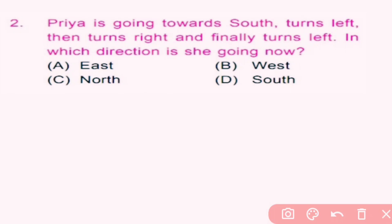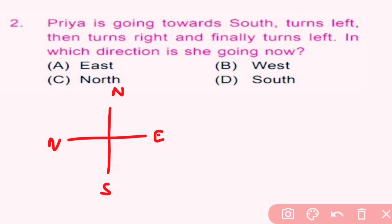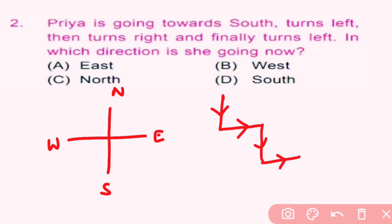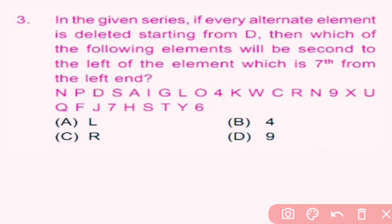Question number 2: Priya is going towards south, turns left, then turns right, and finally turns left. In which direction is she going now? She is going towards south. Turning left means she faces east. Turning right means she faces south again. Finally, turning left means she faces east. So the direction is east, and A is the correct answer.